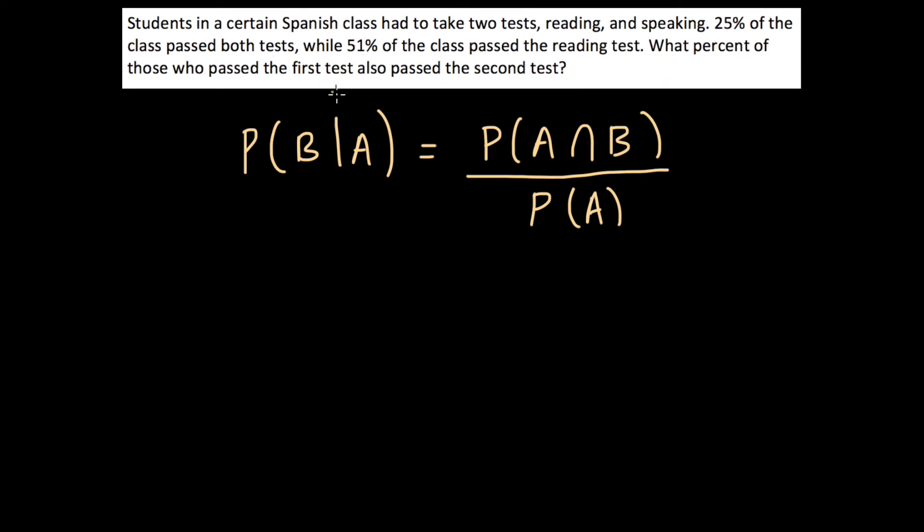So we're trying to find the proportion of people who have, we know for certain that they have passed the first test. And of those people, we are trying to find the percent of people who passed the second test. So in this situation, event A would be passing test 1 and B would be passing the second test.